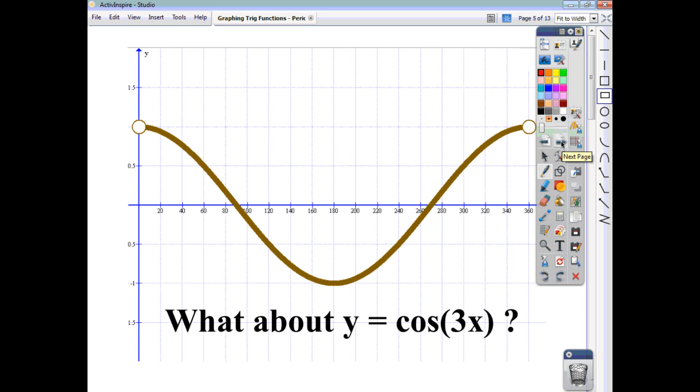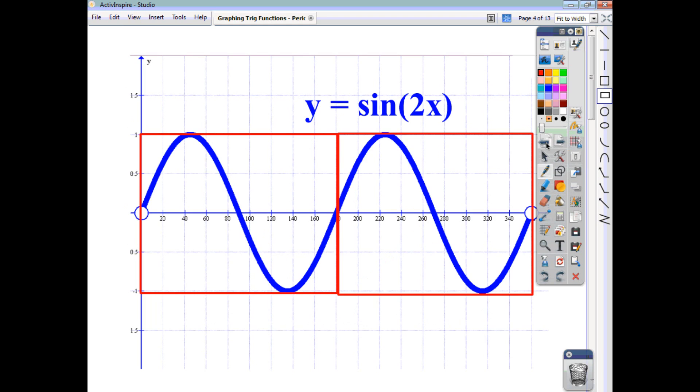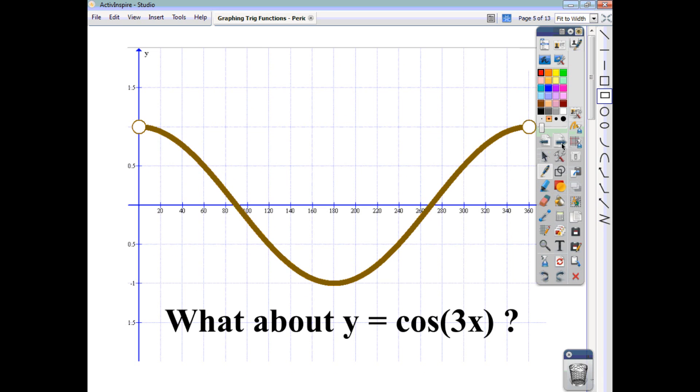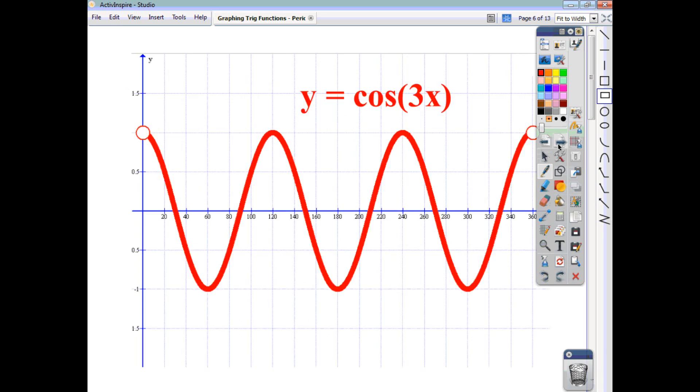Now, there you have y equals cos x. What about the function y equals cos 3x? What's going to happen there? When we had sine 2x, we had two sine waves within 360, with cos 3x, you've guessed it, we're going to have three cos waves, or three cosine cycles, within 360.